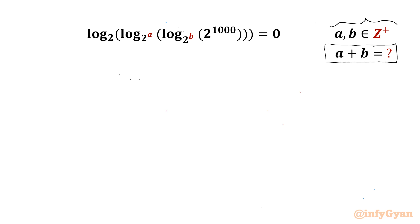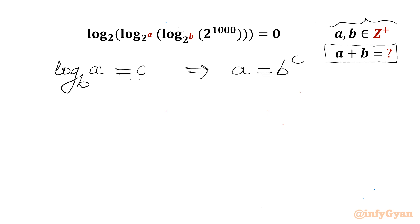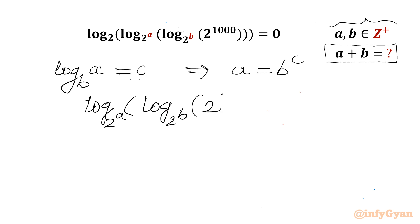Let us get started by writing one log property: log base b of a equals c, then a must be equal to b^c. Using this, I will rewrite the expression as log base 2^a of log base 2^b of 2^1000 equals 2^0.